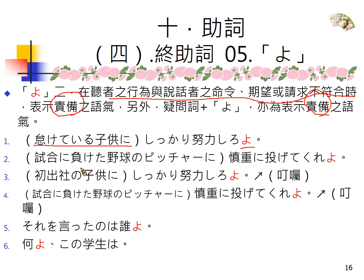「試合に負けた野球のピッチャーに」，比如说你是那个棒球的教练，对于出去投球然后比赛输了的投手，「亂投啊！」你说你慎重地好好投——一球入魂！「慎重に投げてくれよ！」，这是责备的语气。